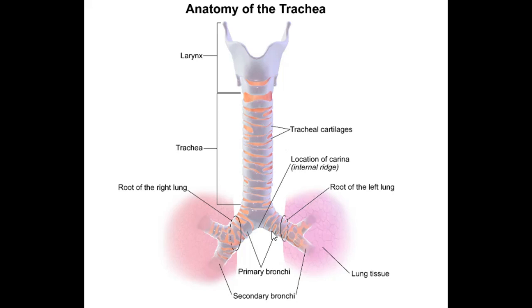The trachea has cartilages — they are C-shaped rings, as you can see here. These rings are supported by the trachealis muscle. So the muscle that supports the trachea is the trachealis muscle.